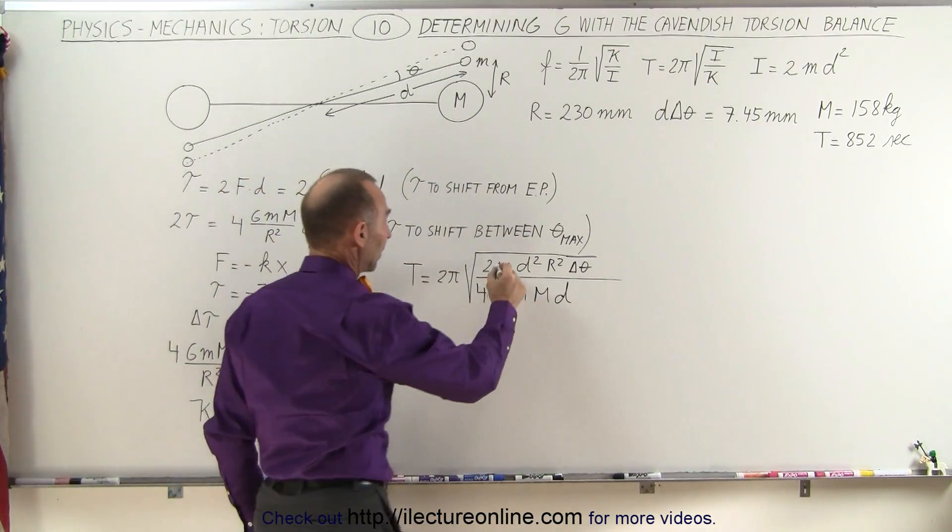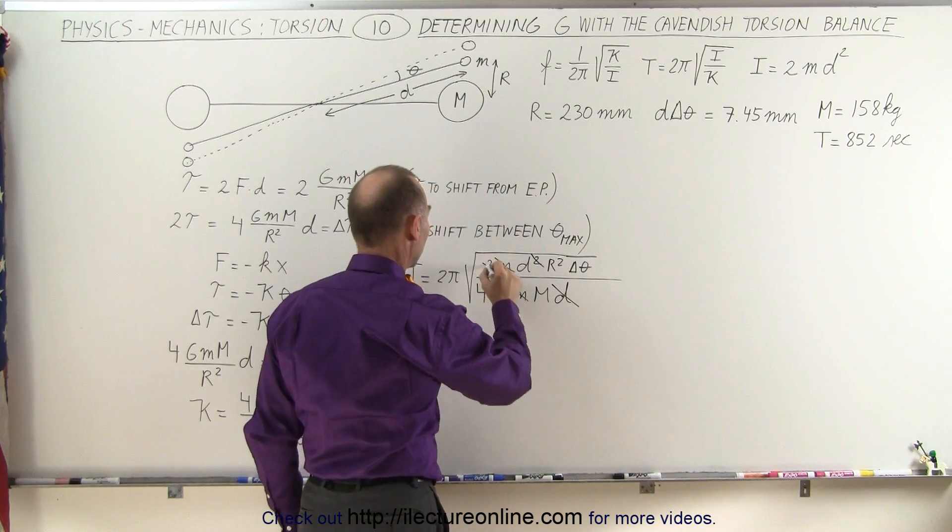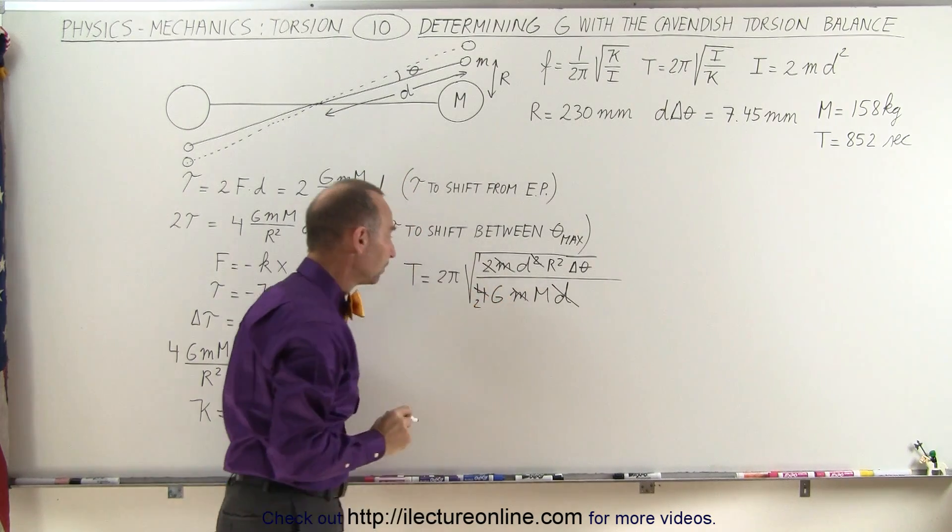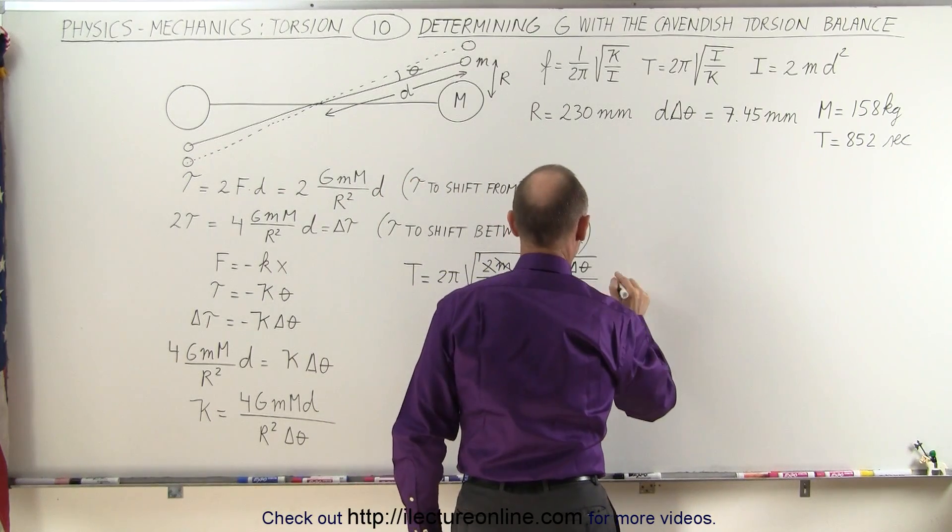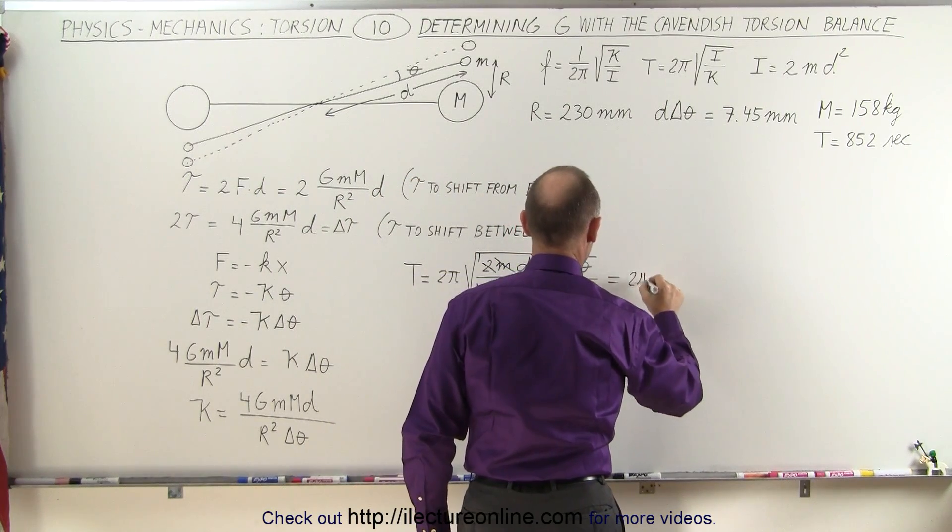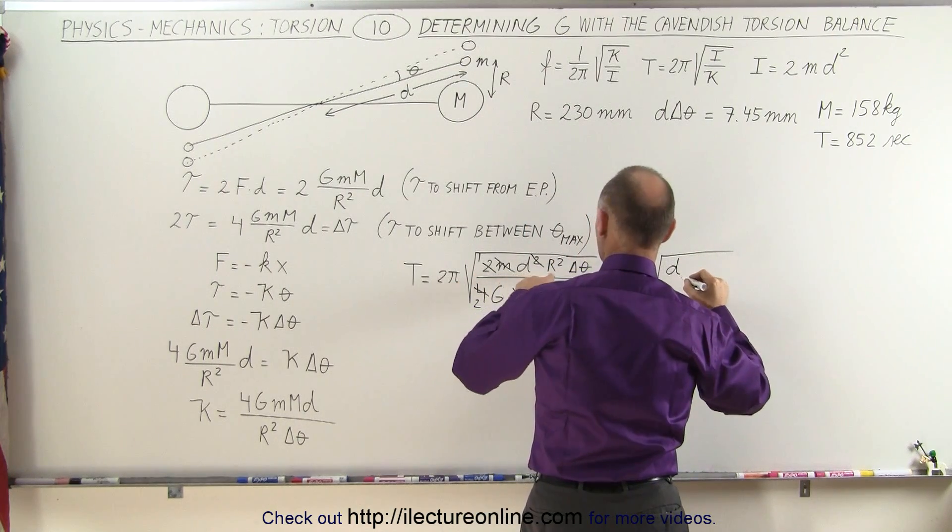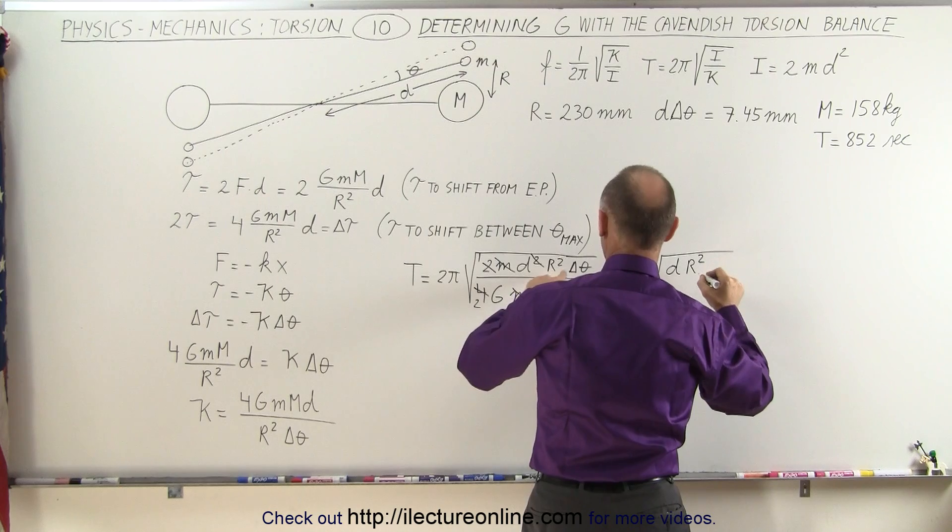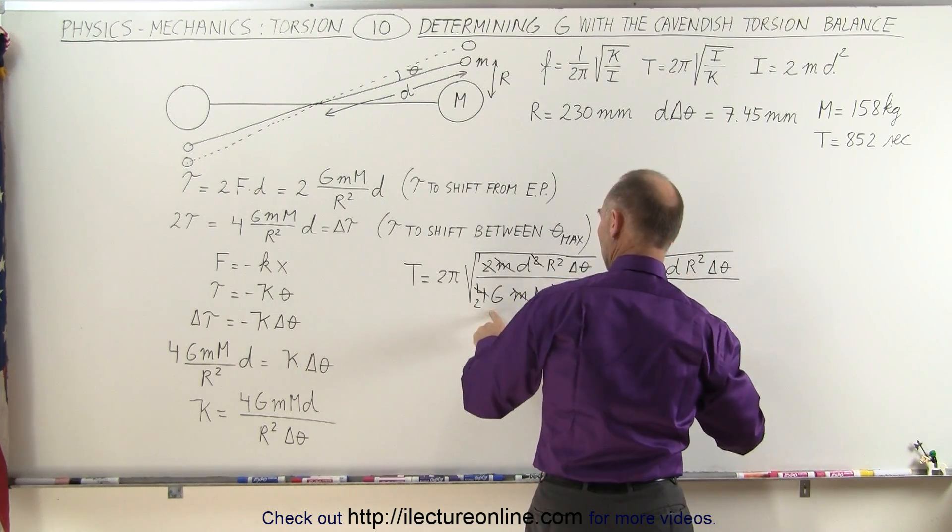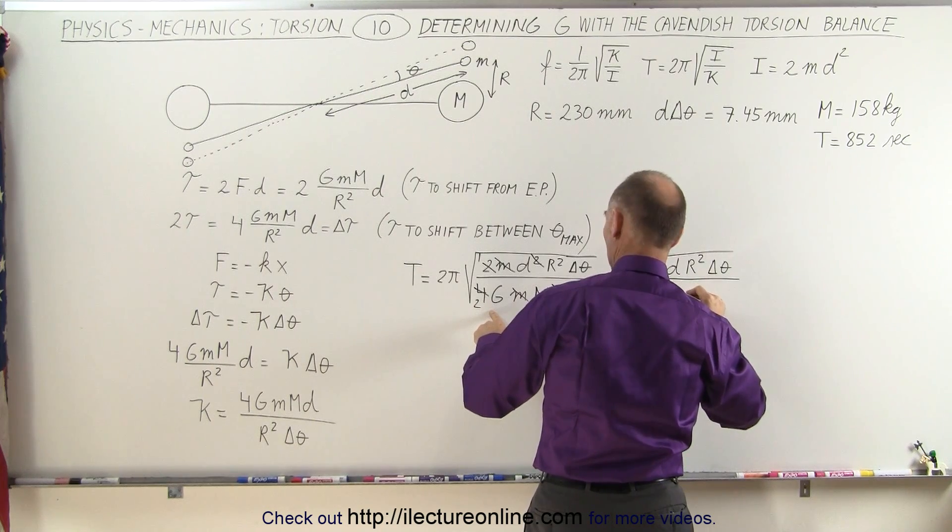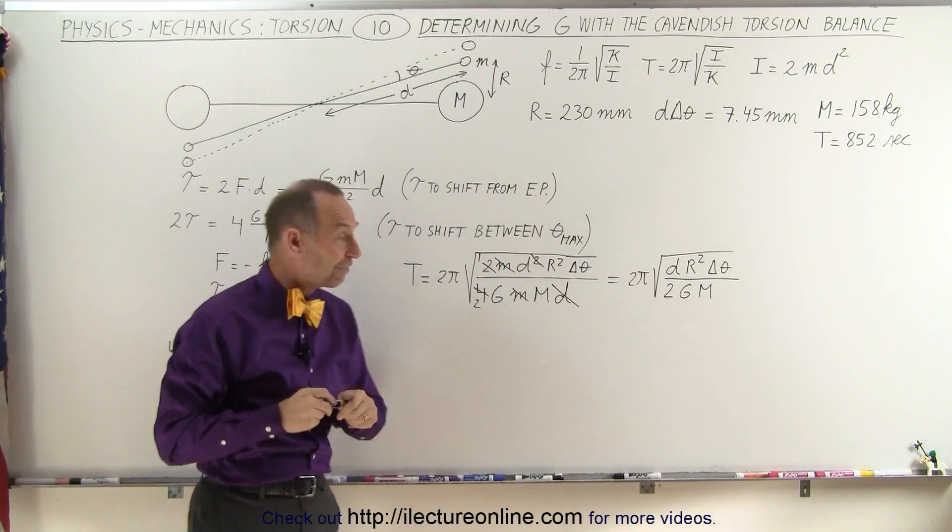Now we can simplify some things here. First of all, the small masses cancel out. This D will cancel out one of those Ds, and this 2 becomes a 1 when this 4 becomes a 2. So let's rewrite what we have left. This is equal to 2 pi times the square root of, in the numerator we end up with a single D, with R squared with delta theta, and in the denominator we end up with 2 times G times big M.